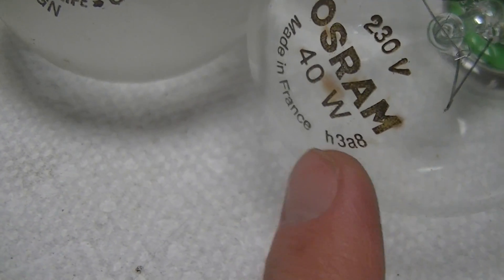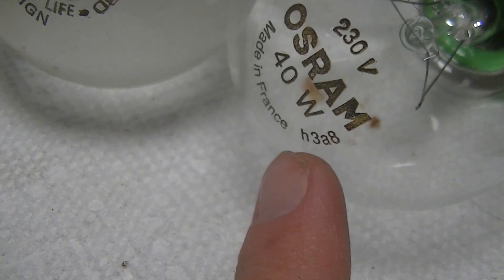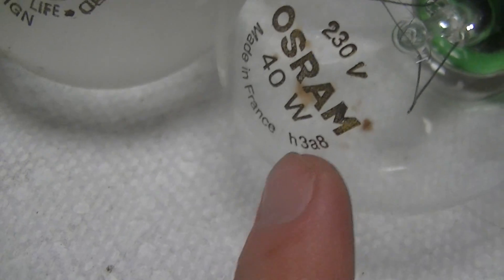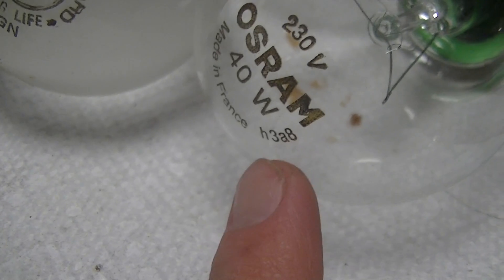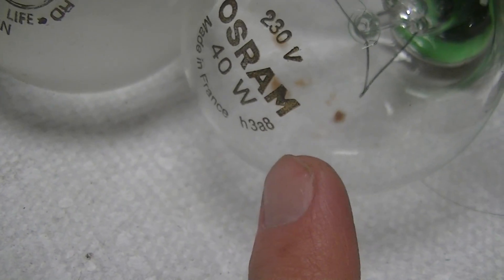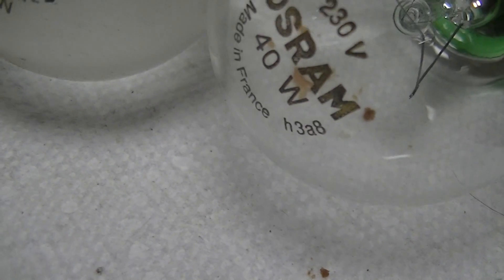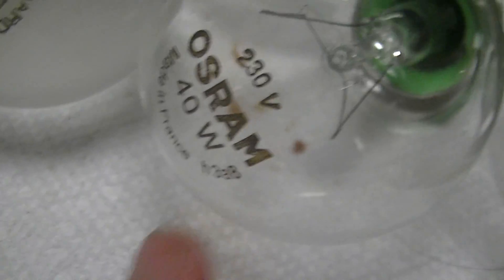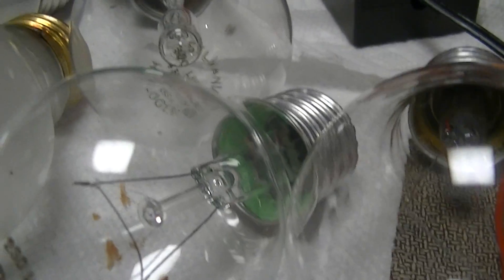The H is the date code, H is the factory, 3 is the year 2013, A is I think October but that might be November, 8, no idea what that is or if that has any meaning at all. Every single Osram date code that I've seen of this format has an 8 at the end.